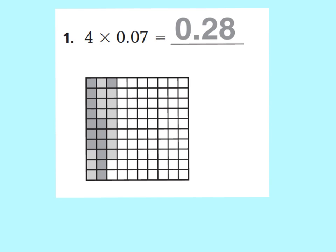Now this first example is done for you — I'm just going to walk you through it. Let's look at the question: it says 4 times 7 hundredths. Remember, multiplication means groups of. So we have 4 groups of 7 hundredths, and your total would be 28 hundredths. Look at this model and see why. The first dark section is shaded, the second has 7 hundredths shaded lighter — that's 1 group. 2 groups of 7 hundredths; another darker one is 3 groups. And a 4th group of 7 hundredths makes a total of 28 hundredths.